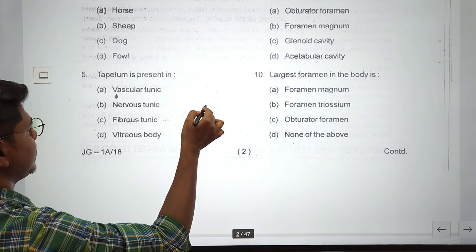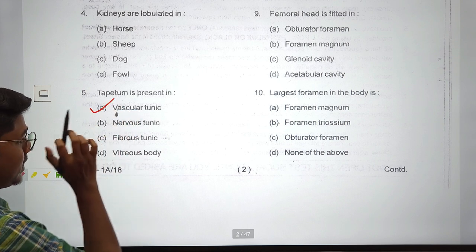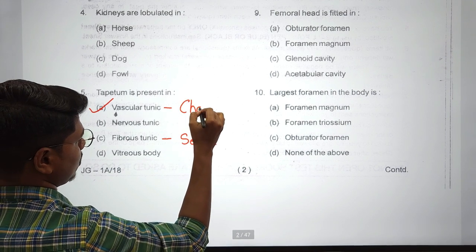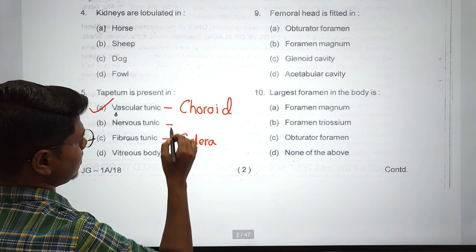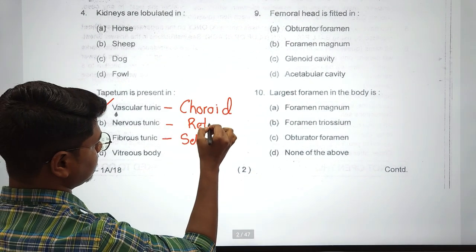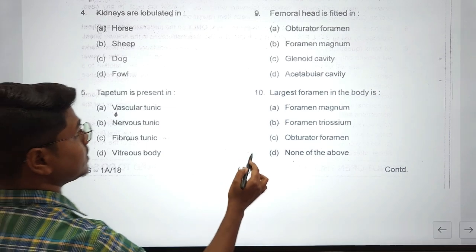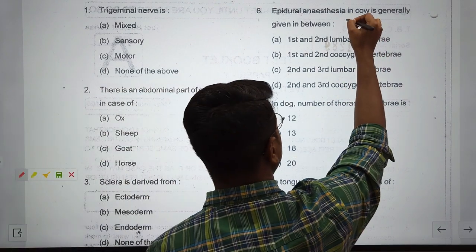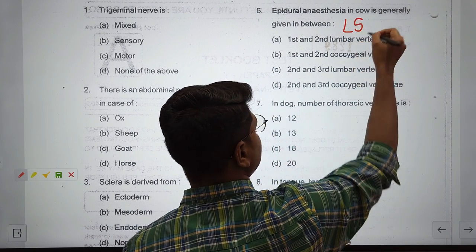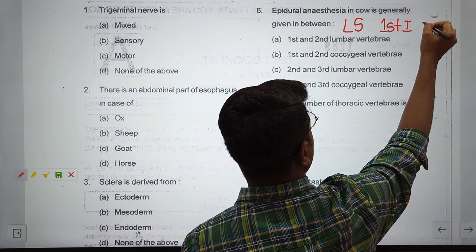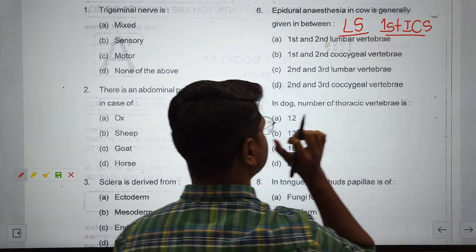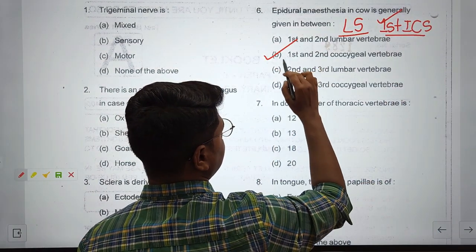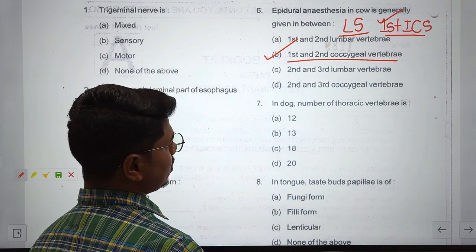Tapetum is present in vascular tunic. There are three tunics: the outer one is fibrous tunic known as sclera, the middle one is vascular tunic known as choroid, and the nervous tunic which is the innermost, also known as retina. Question six: epidural anesthesia in cow is generally given between lumbosacral joint and first intercoccygeal space. Most common is first intercoccygeal space - the space between first and second coccygeal vertebrae.